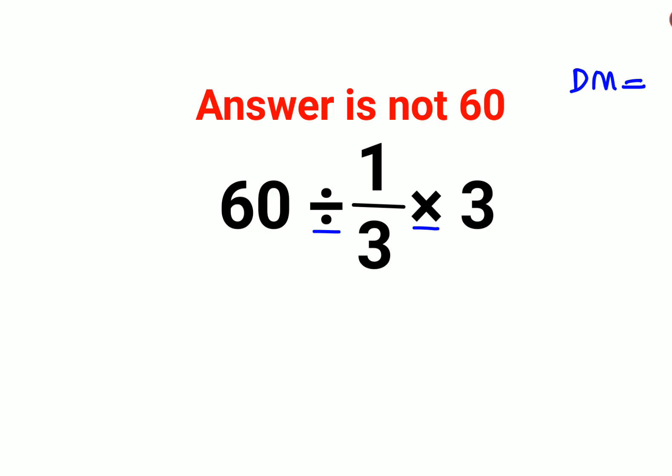So all you have to do is go from left to right. Whatever operation comes first on your left will be done first. Here we have 60 divided by 1/3. When you have a division sign, we follow the rule of KCF.